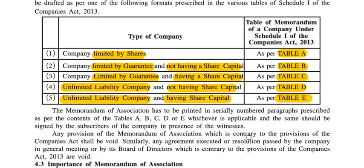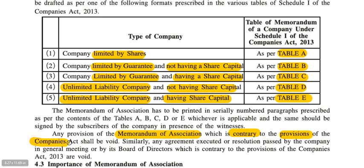Any provisions of the MOA which are contrary to the provisions of the Companies Act shall be void. Similarly, any agreement executed or resolution passed by the company in a general meeting or by its Board of Directors which is contrary to the provisions of the Companies Act are also void.